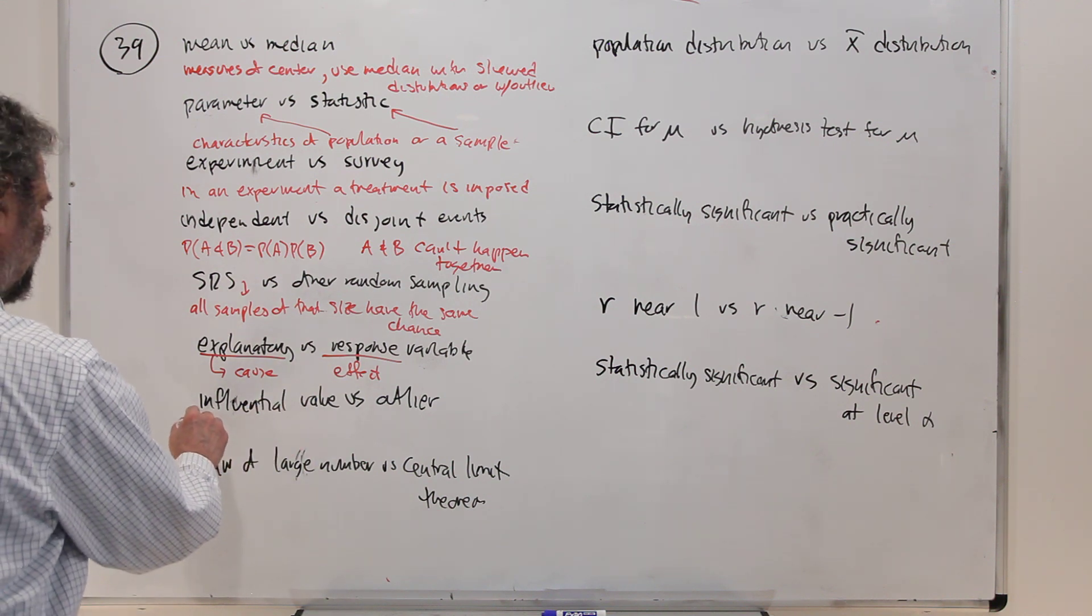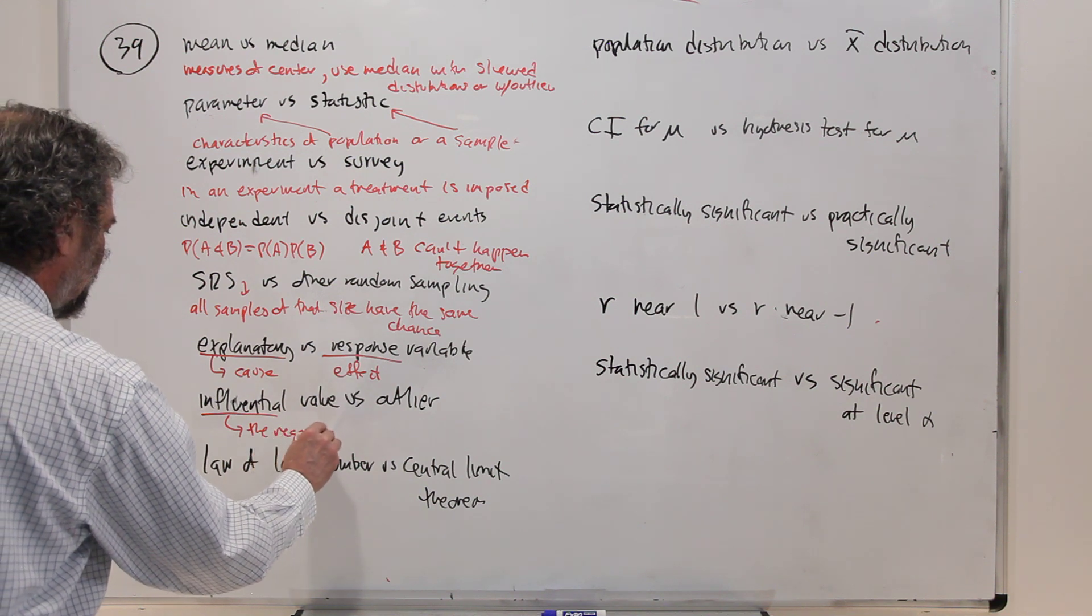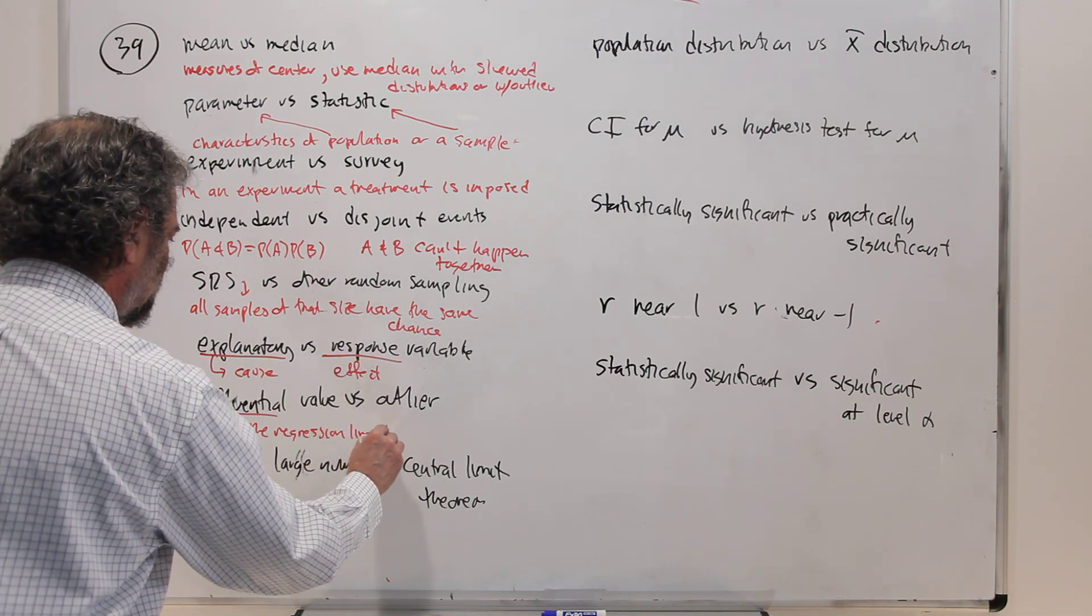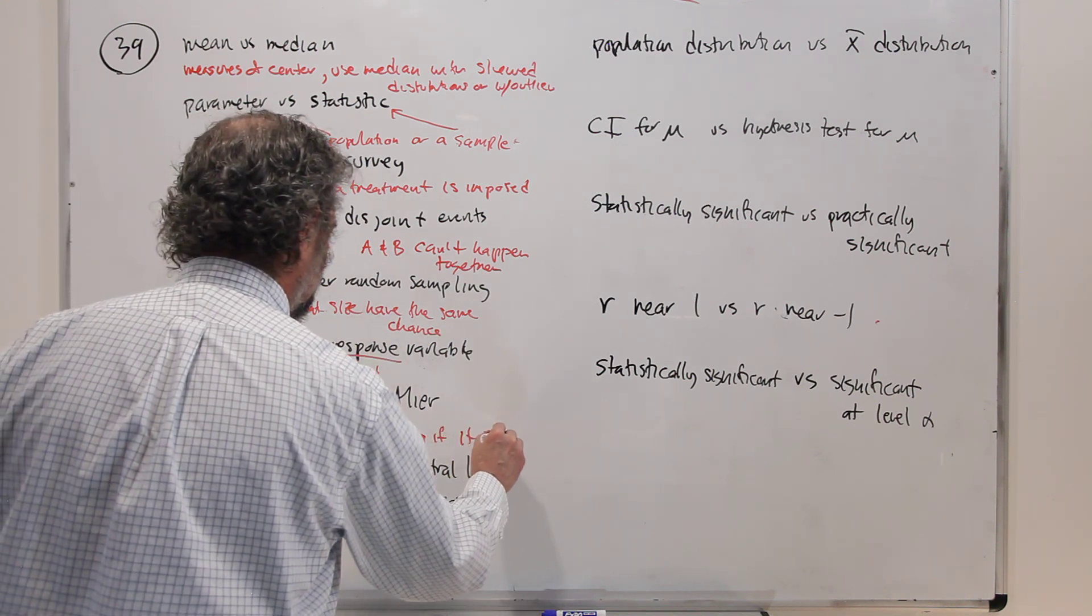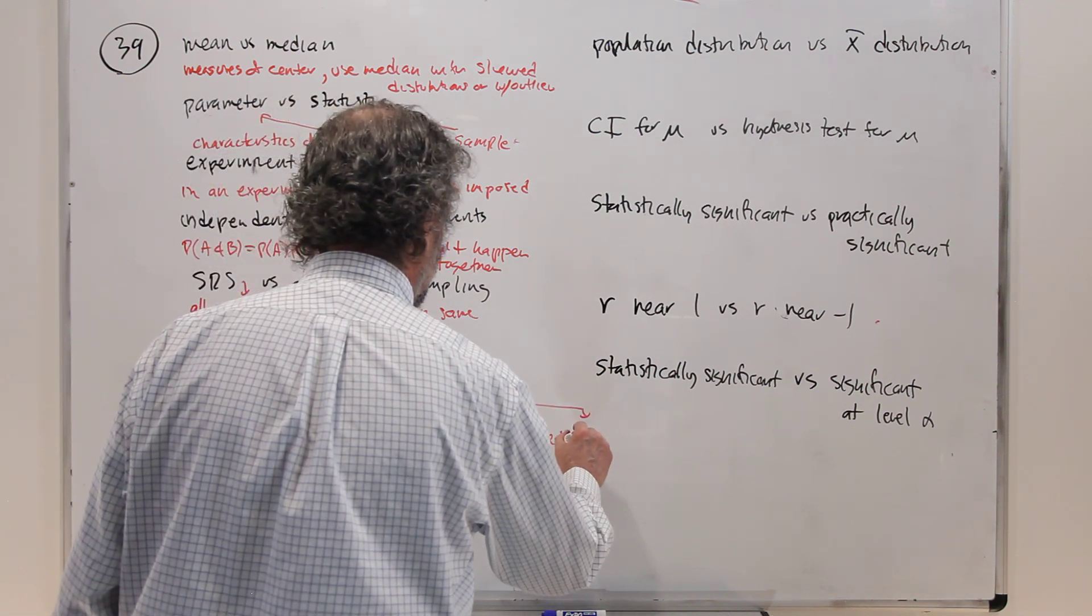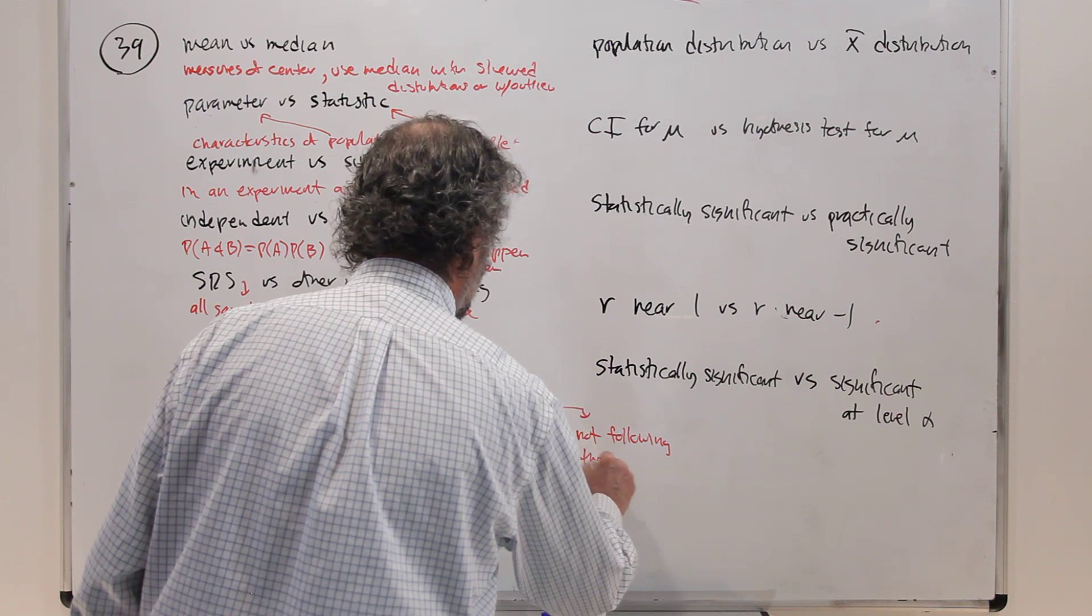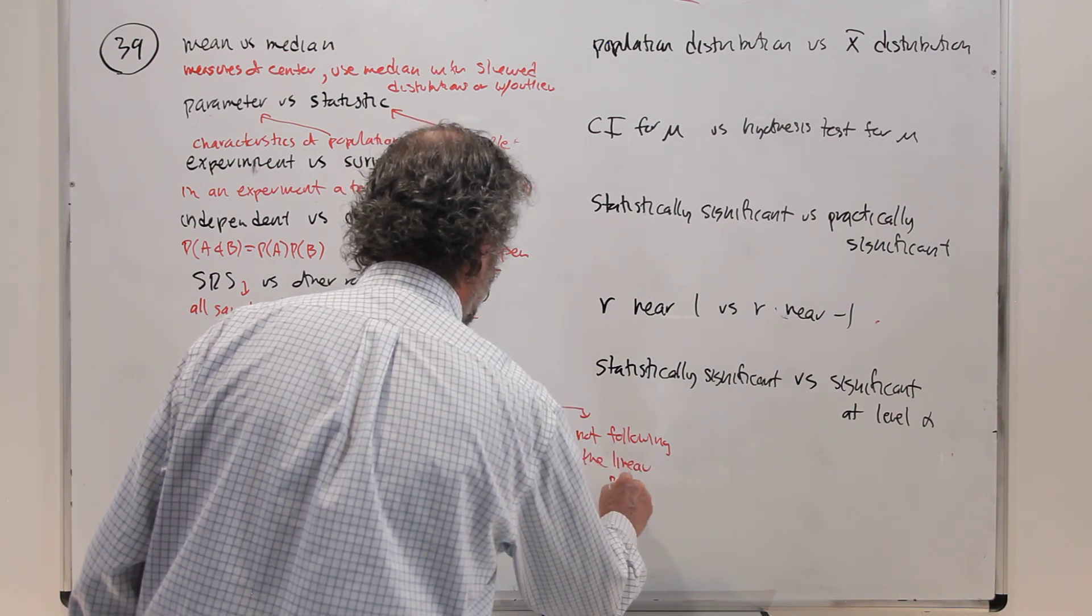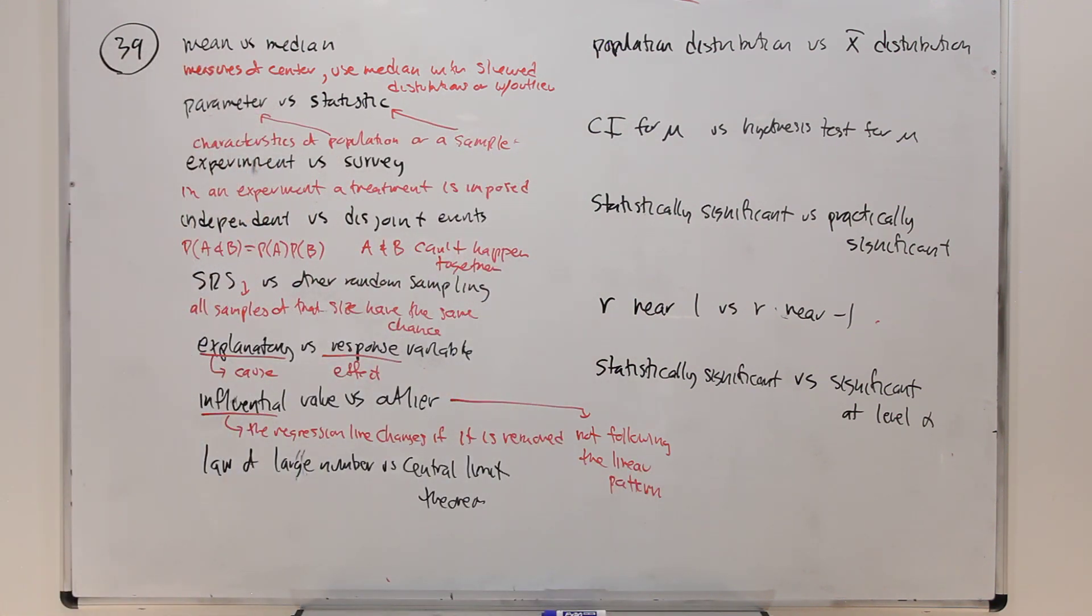Influential value versus outlier. Influential says the regression line changes if it is removed or added. Outlier just says not following the linear pattern. So you can have values that just don't seem to be on the line. But if you take them away, they don't change the position of the line very much.